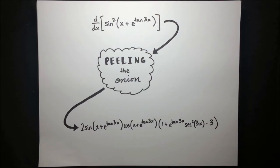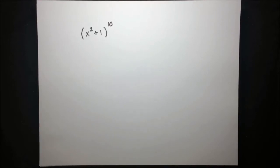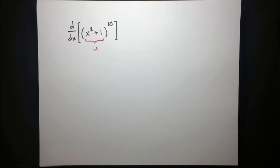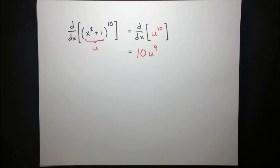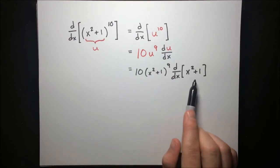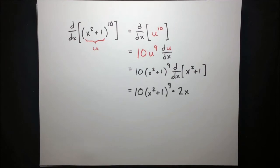Before we get into peeling the onion, let's recap what the chain rule is, since peeling the onion is ultimately just a method to speed up the chain rule. The chain rule says that if we have some expression — say x squared plus 1 to the tenth power — and we want to differentiate it, we can simplify by lumping up some terms into another variable, say u. So the expression becomes u to the tenth, and we differentiate that using the power rule. The catch is we have to multiply by du/dx afterwards — but that's okay, because u is just x squared plus 1, so the derivative is just 2x. And there we have our derivative.